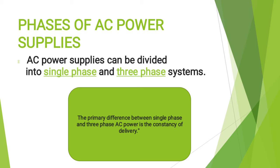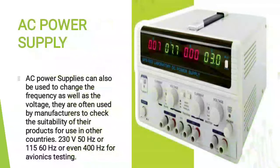AC power supplies can also be used to change frequency as well as voltage. They are often used by manufacturers to check the suitability of their products for use in other countries — for example, 230V 50Hz or 115V 60Hz, or even 400Hz for avionics testing.